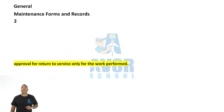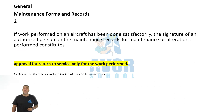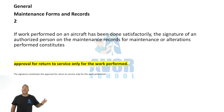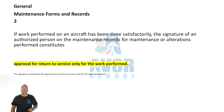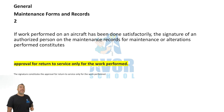Number two: Approval for return to service only for the work performed. If work performed on the aircraft has been done satisfactorily, the signature of an authorized person on the maintenance records for maintenance or alterations performed constitutes the approval for return to service only for the work performed.